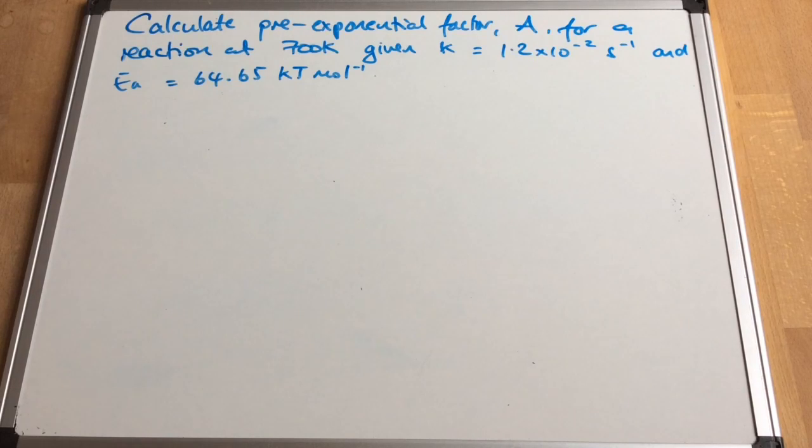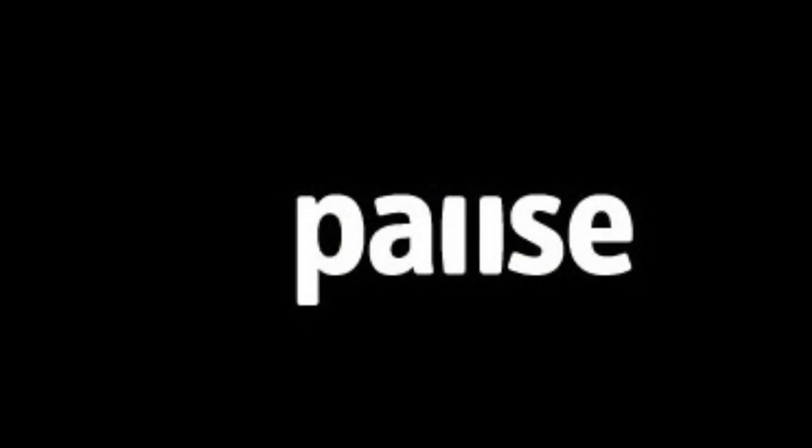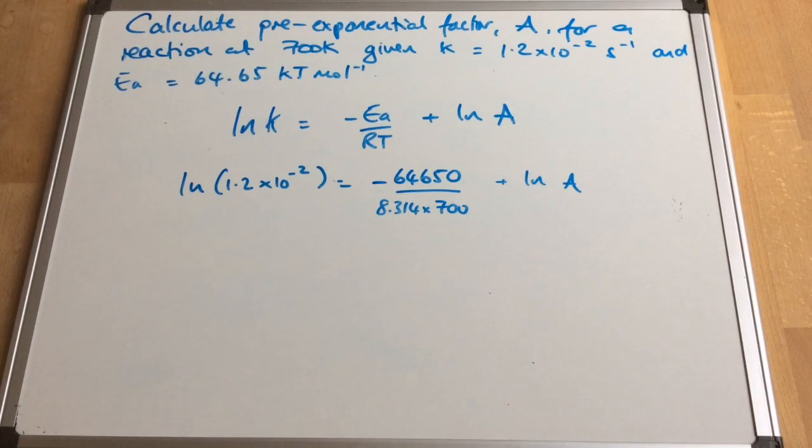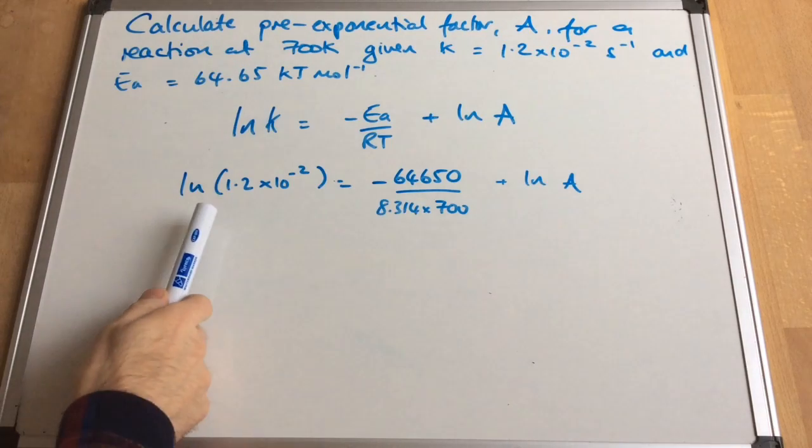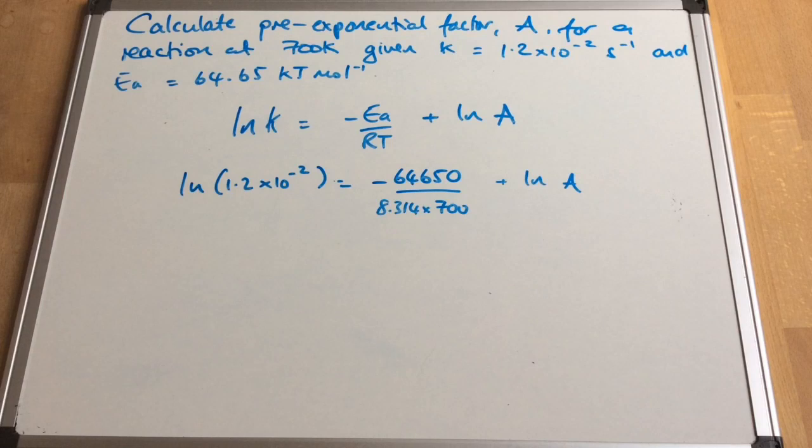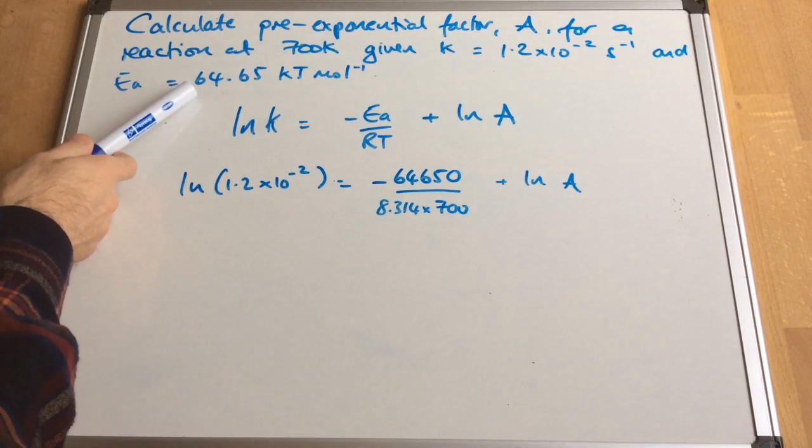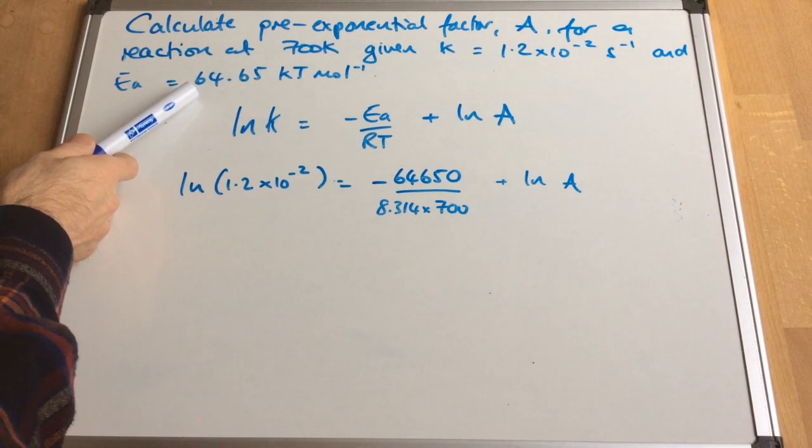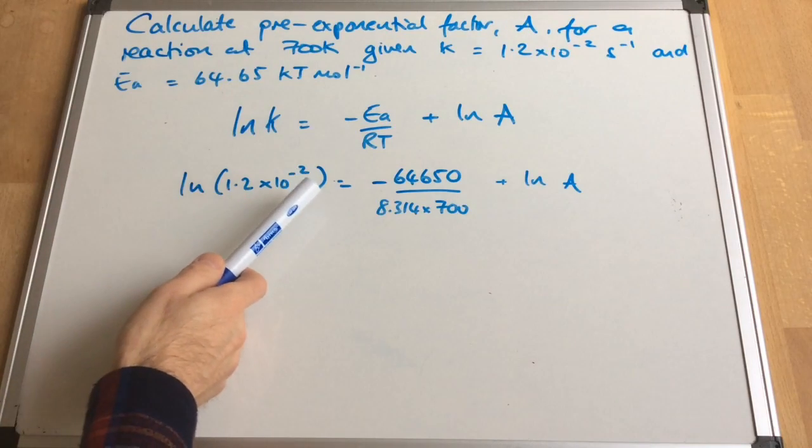So if you want to have a go, pause the video, and then we'll go through the answers. So just as before, we're using the natural log form of the Arrhenius equation, which is on the datasheet, so don't worry about having to remember that one. I've subbed in the values that we've been given in the question, but just a little thing to remember.